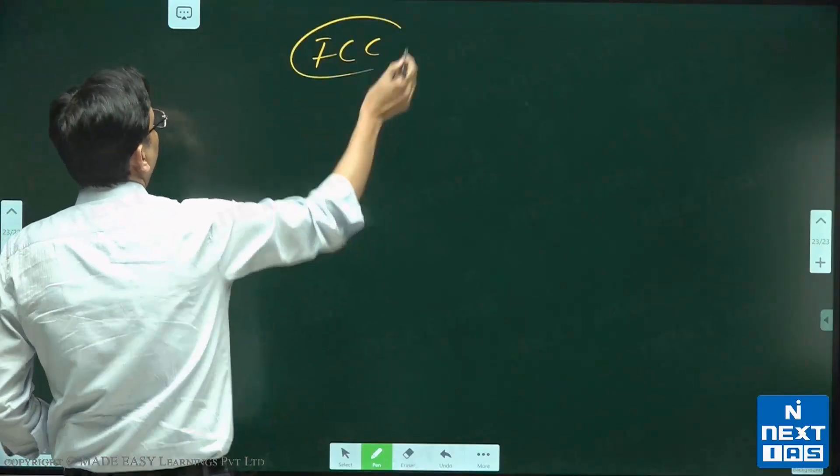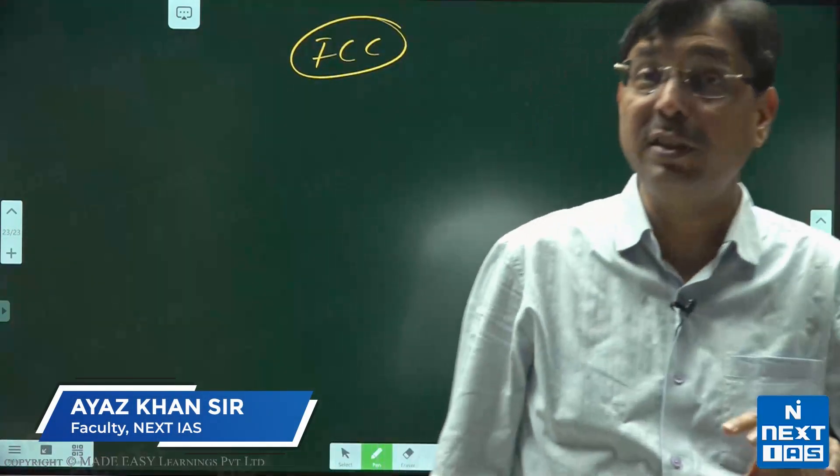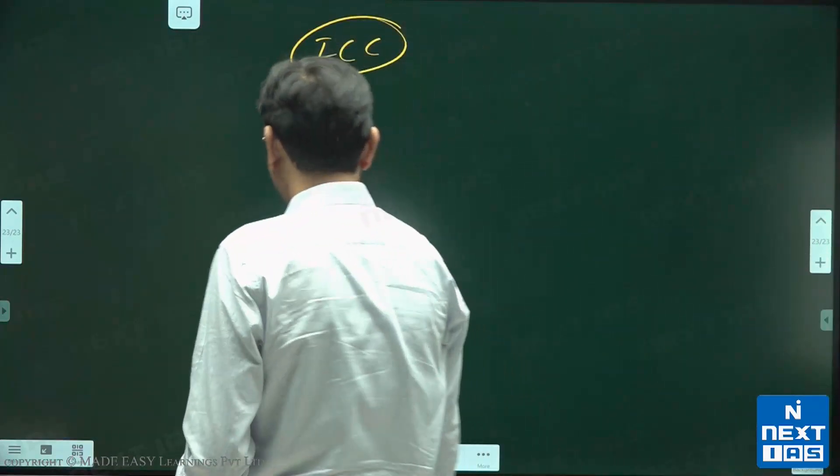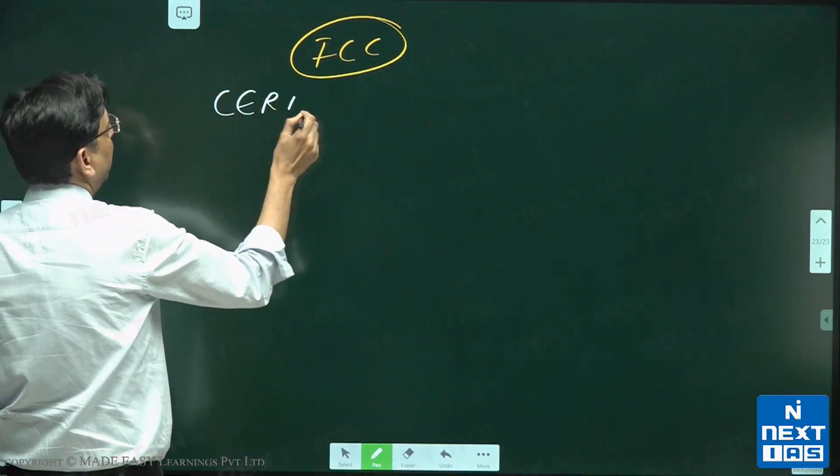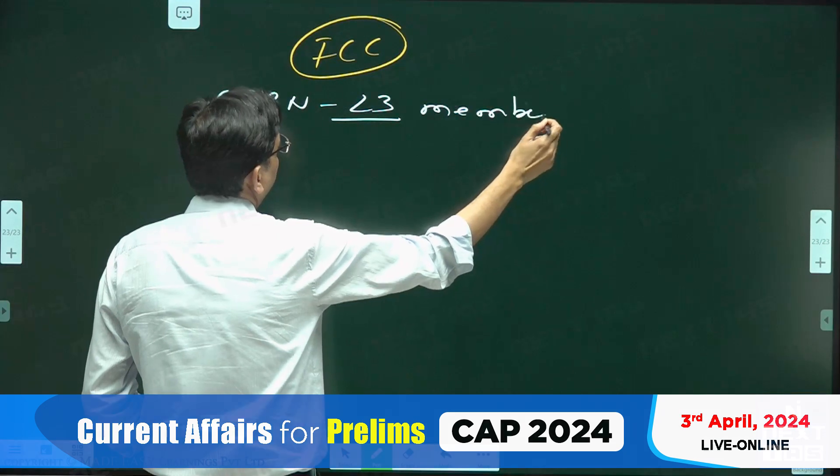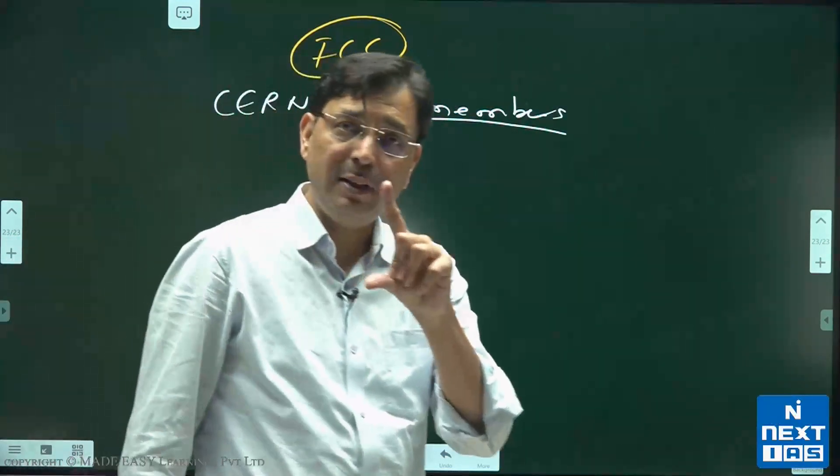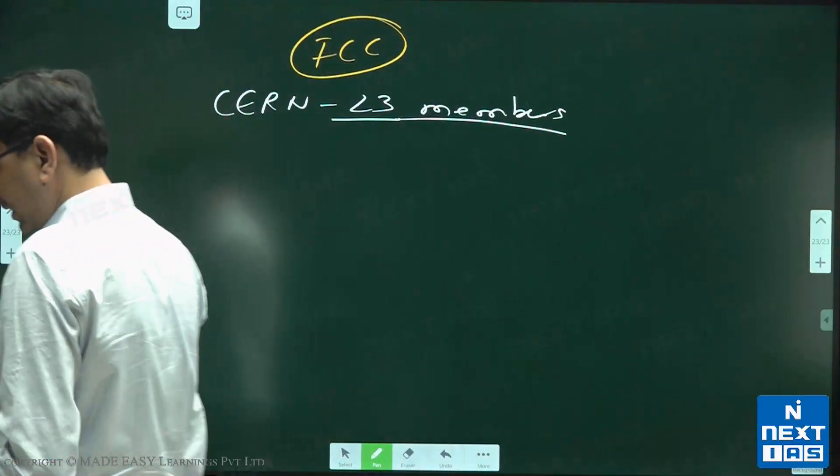The Future Circular Collider, FCC, is a project of CERN. CERN has 23 members, and if you see one, I will definitely tell you because you will not take that as the answer.